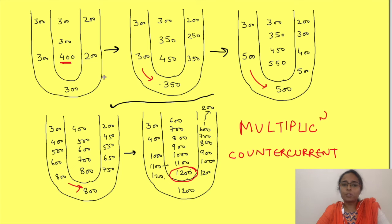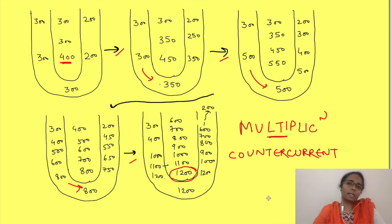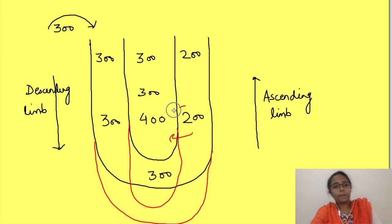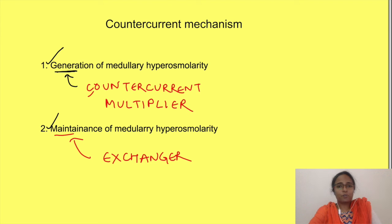That is why this mechanism is called the counter-current multiplier: 'counter-current' because fluid flows in parallel but opposite directions, and 'multiplier' because with each cycle of fluid flow, multiplication of medullary osmolarity occurs. If nephron length is greater, transporters have more time to remove ions, which is why counter-current multiplication occurs in juxtamedullary nephrons — which are much longer than cortical nephrons.